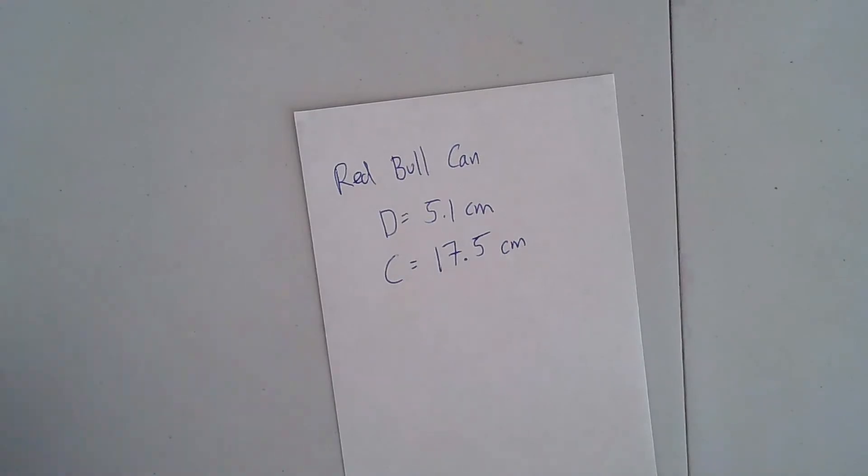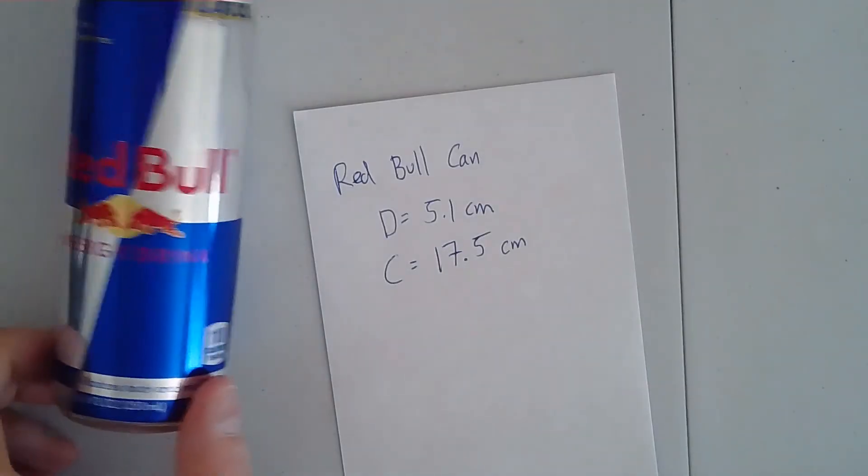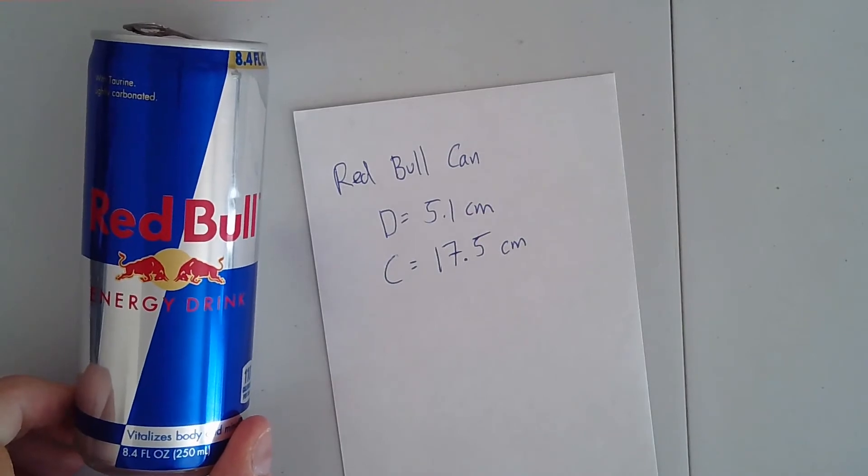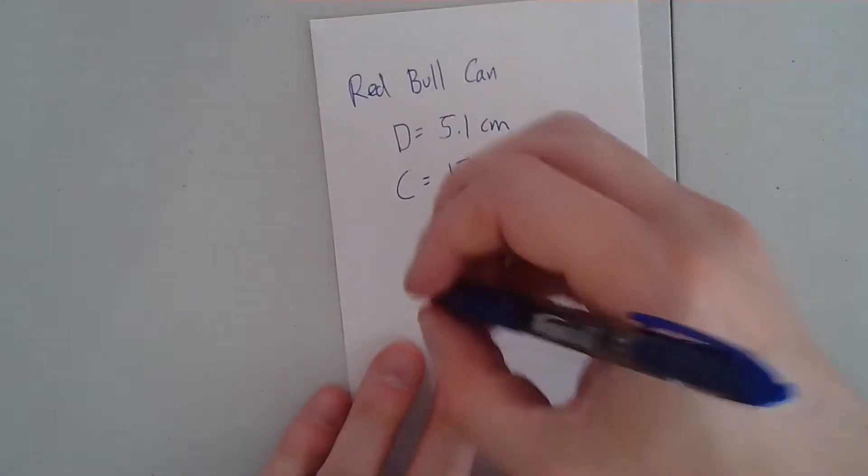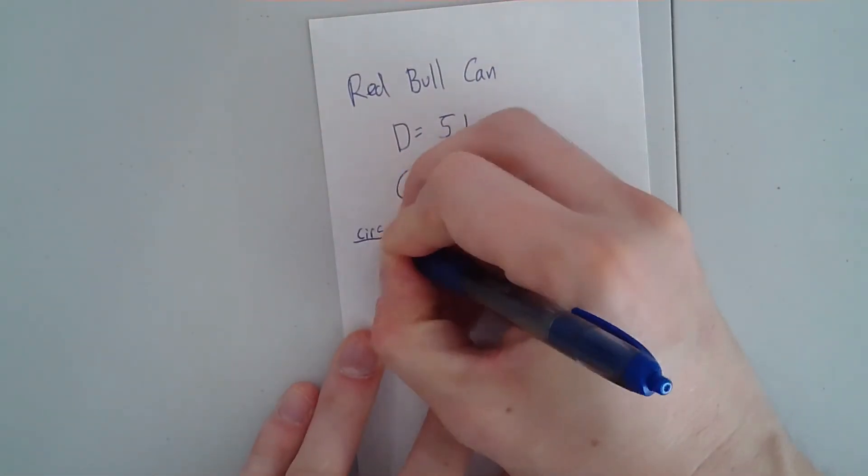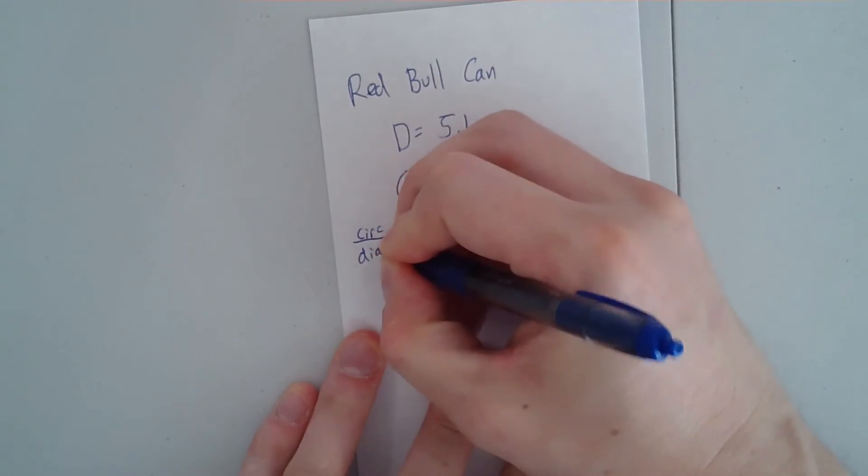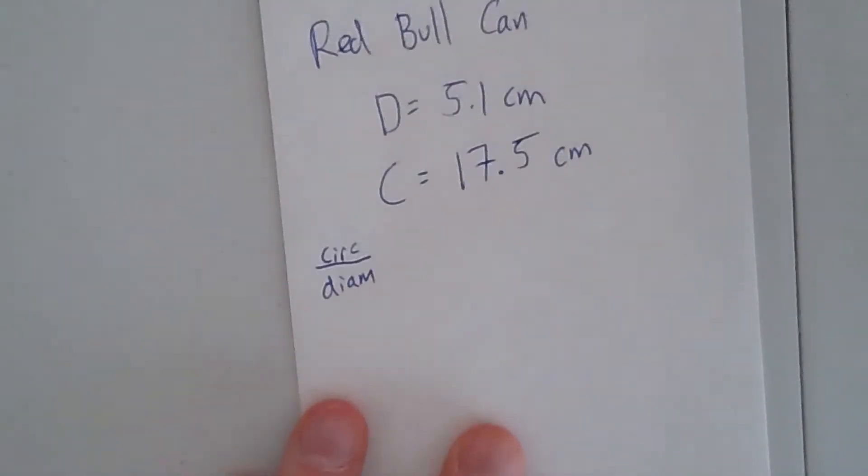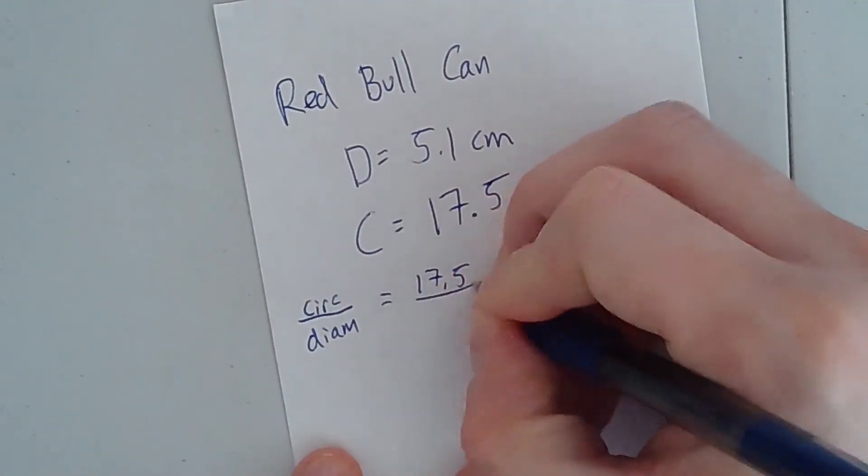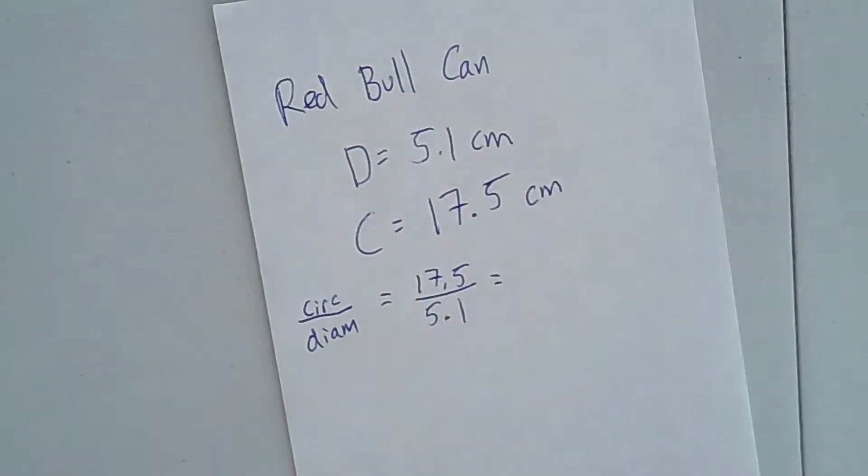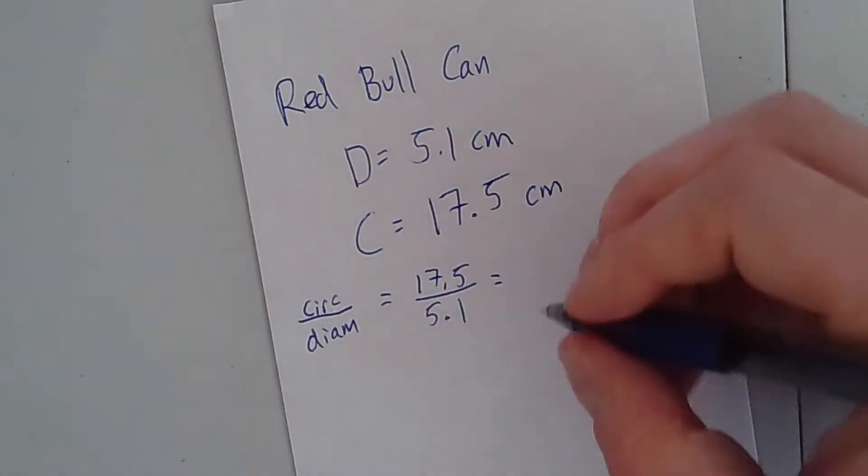Okay, for this Red Bull can, the diameter was 5.1 centimeters. The circumference is 17.5 centimeters. So what we're going to do is we're going to take the circumference, and we're going to divide it by the diameter. Which would be 17.5 divided by 5.1. Hey, Google, what's 17.5 divided by 5.1? The answer is approximately 3.431373.